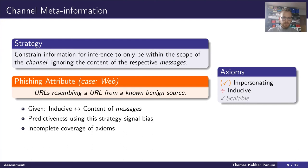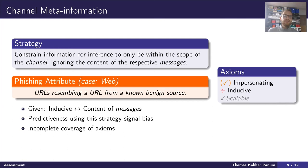The strategy called channel meta information refers to using only information available to the channel itself. A typical example is examining URLs of websites to detect whether something is phishing. This aligns with the axiom of impersonation to a certain extent, however we don't feel it captures it completely, as users also act on the content of messages. Additionally, it doesn't cover message content at all. Therefore, detecting whether a message will be inducive would be unfeasible, as we believe there's a strong connection between induciveness and message content. Any high predictiveness found using this strategy is likely some kind of bias and not necessarily caused by the attack.